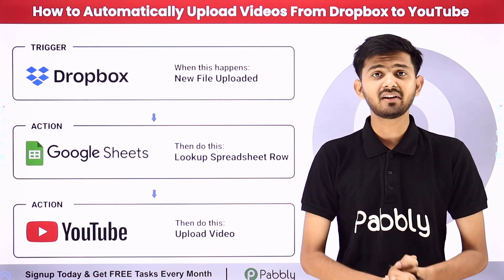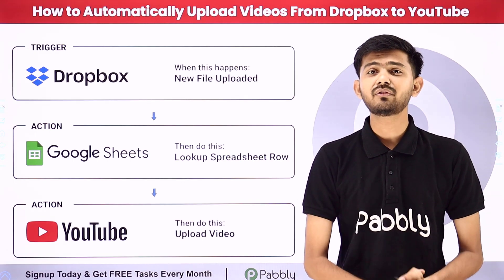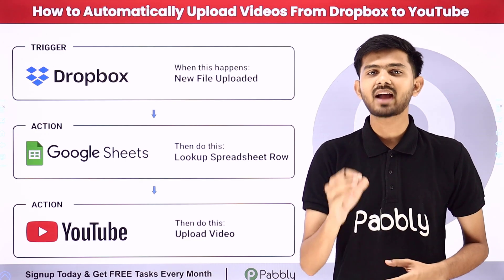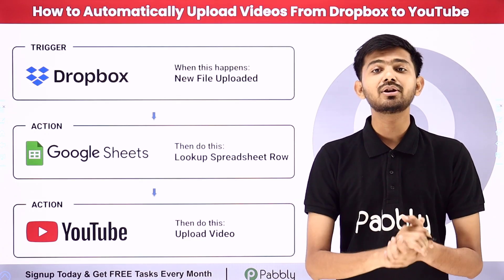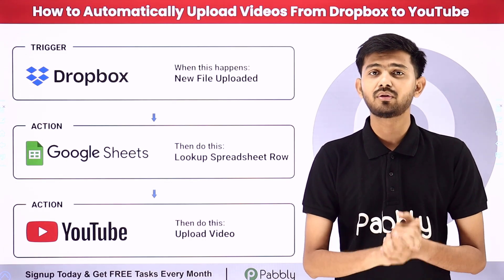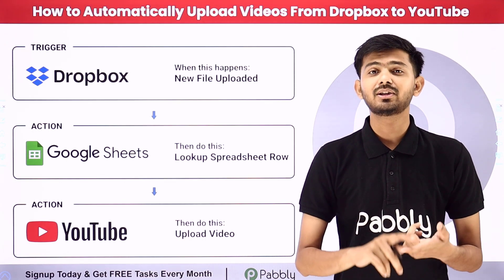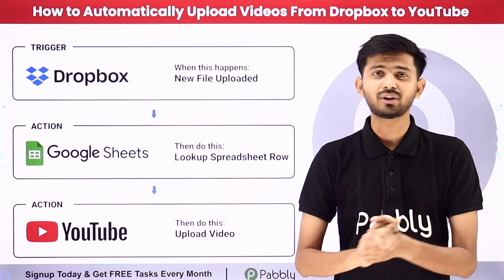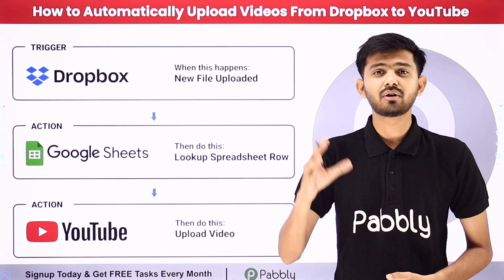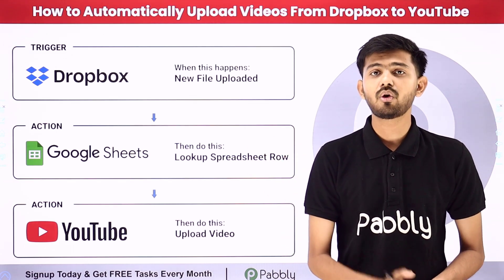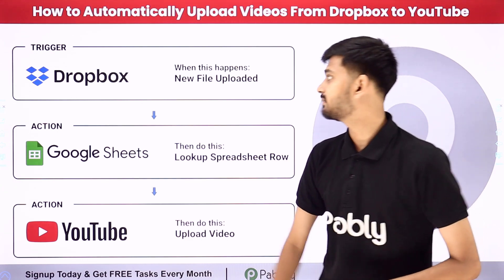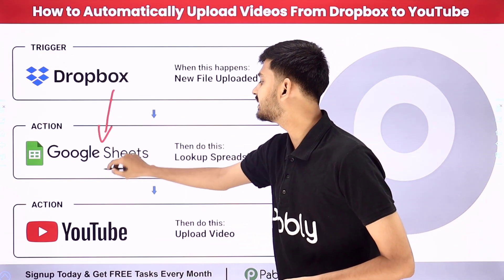My objective is that whenever I upload a new file or a new video on my Dropbox account, then automatically I am going to capture the details of that file and use this to search for the details required to upload a video on my YouTube channel — like the video title, video description, and video tags. To achieve this, I have to build a connection between Dropbox, Google Sheets, and YouTube.